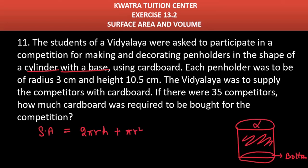The top circle is not included because the pen should be removed from there — only the base is closed. Now putting all the values in: 2 × (22/7) × r, which is 3, × height, which is 10.5. Then the last term is (22/7) × r², which is 9.